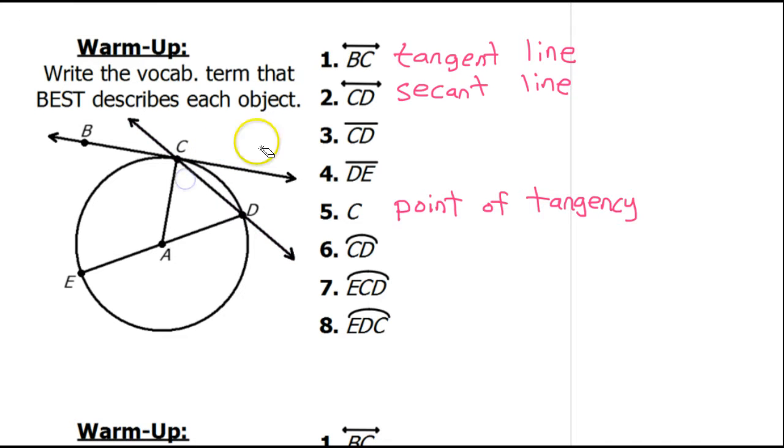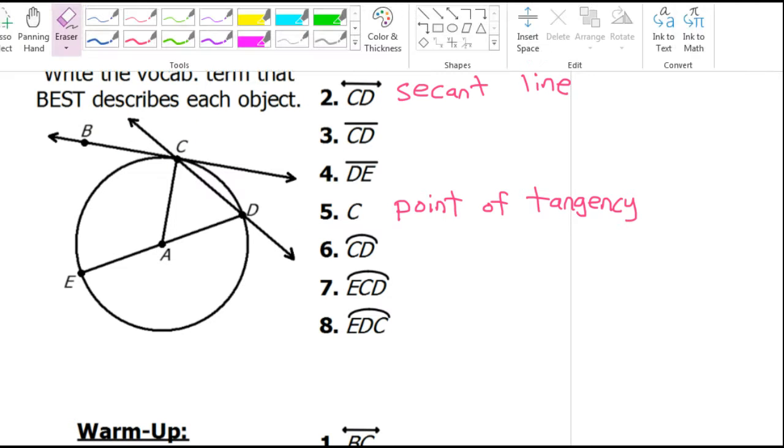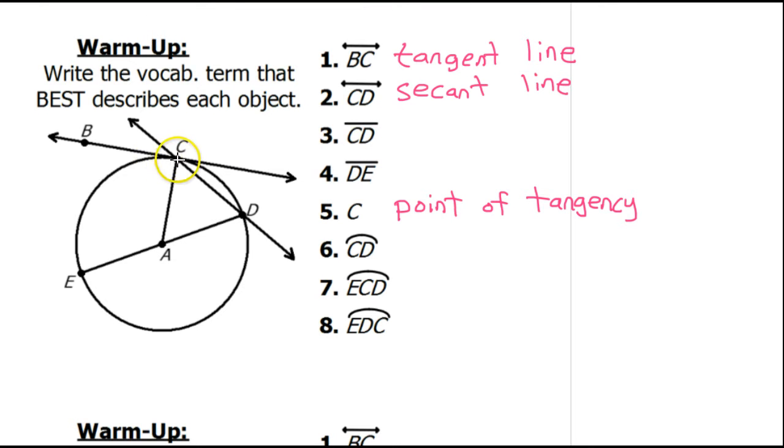Now, the only difference between that and problem number 3 is that instead of a line that goes forever in both directions, problem number 3 is a segment. This is segment CD. So it begins and ends right here on the circle. So, a segment like this is called a chord.